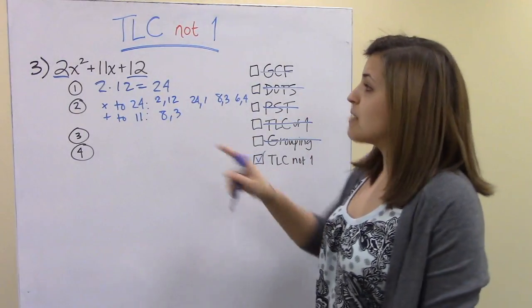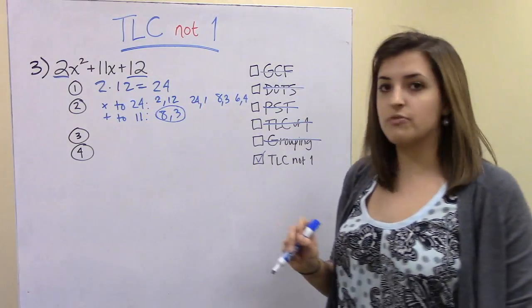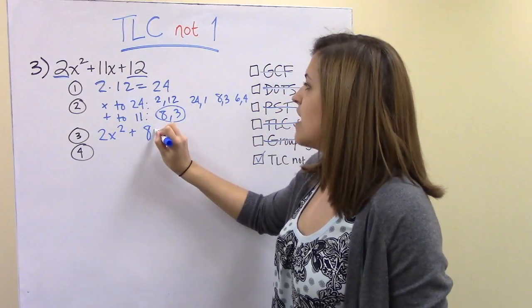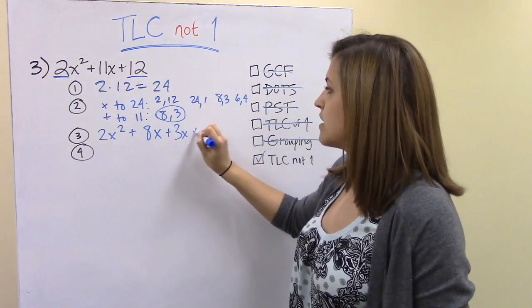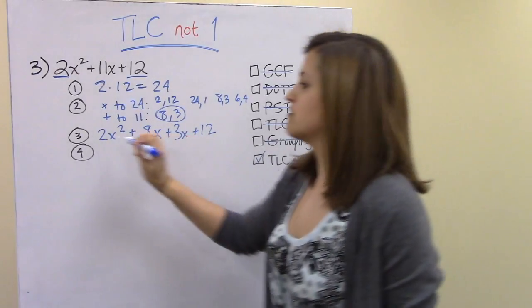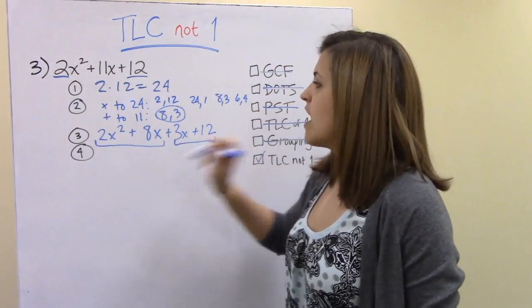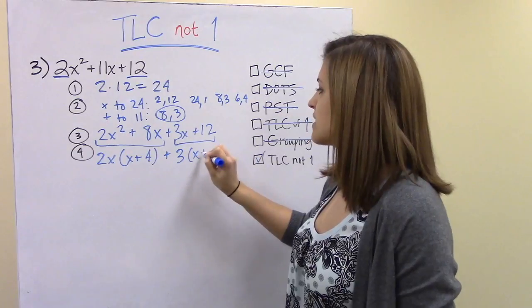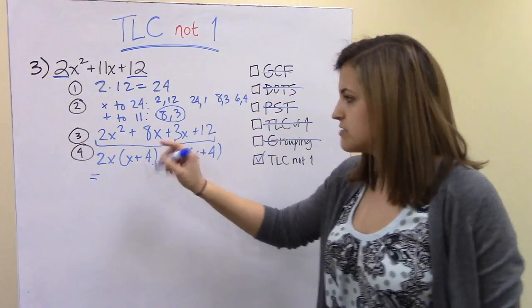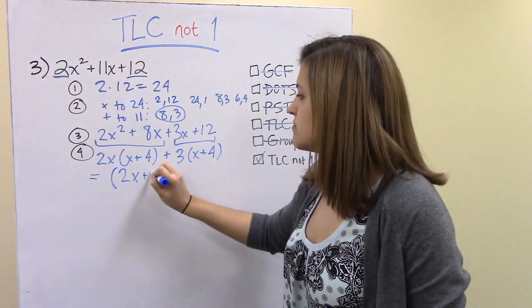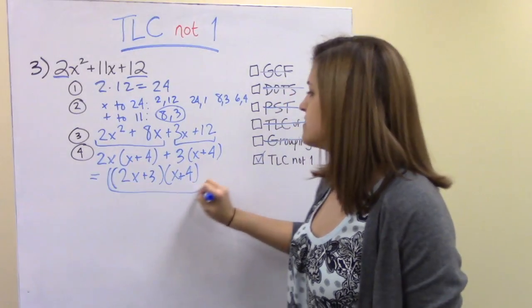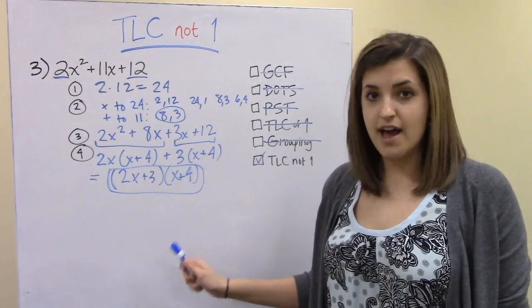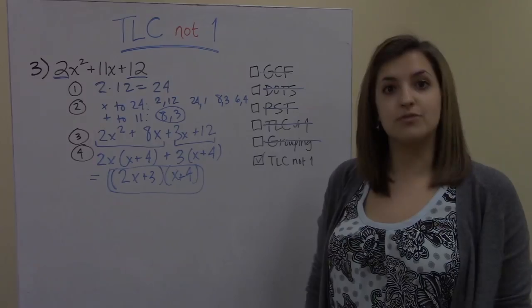In step three, we use 8 and 3 to split up the middle term 11x, giving us 2x² + 8x + 3x + 12. Now solve by grouping: group the first two terms and the last two to get 2x(x + 4) + 3(x + 4), which factors into (2x + 3)(x + 4). It's always good to check your answer by FOILing to confirm you get back to the original expression.